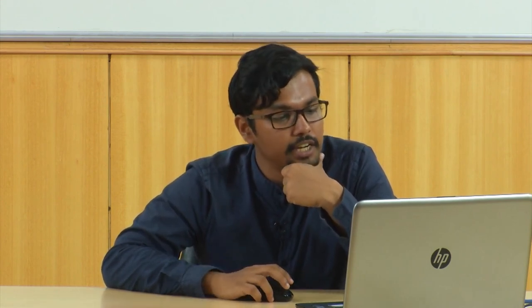In this example, three different kinds of lines coexist. The horizontal lines can be seen as actual lines. The closely spaced dots create linearity and are implied lines. Looking at the complete composition, the centre has a focal point and all the leaves radiate from it — these are psychic lines. The user's eye attention first comes to the centre and then moves outward to the corner of the composition.